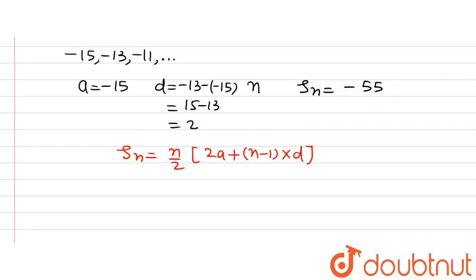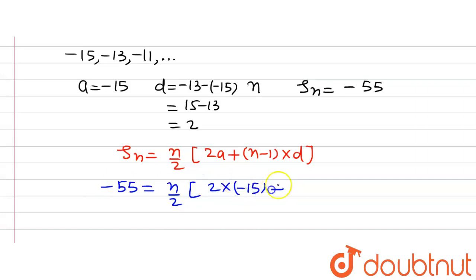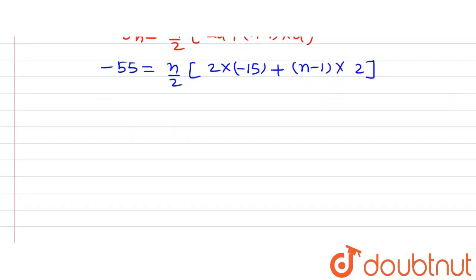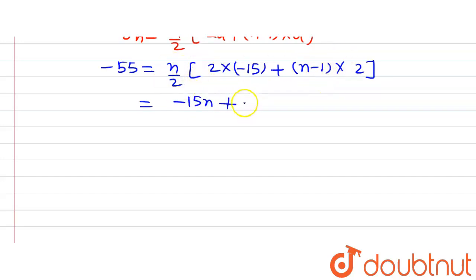Now putting in all the values, let us solve this equation for n. So S_n equals minus 55, which equals n divided by 2 times 2A, where A is minus 15, plus n minus 1 multiplied by d, where d is 2. Expanding and multiplying through by n over 2, we get n multiplied by n minus 1 equal to minus 55.